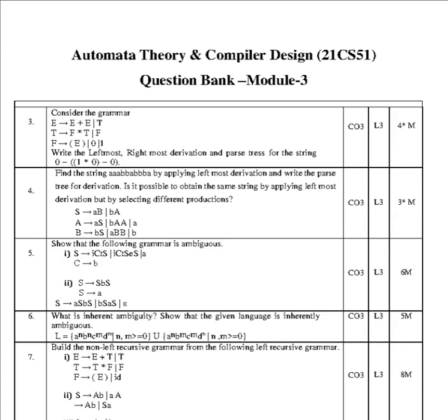Consider this grammar in module 3. This is to check whether there exists ambiguity in grammar or not. You have to apply leftmost, rightmost derivation and construct two different parse trees for the string 0 minus 1 star 0 minus 0. If two different parse trees exist, then we say this grammar is ambiguous.